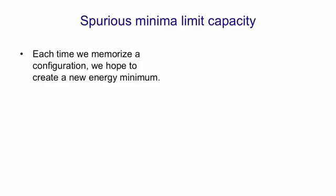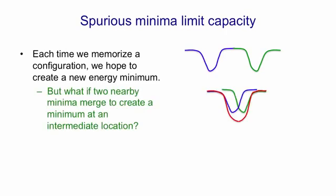If we ask what limits the capacity of a Hopfield net — what is it that causes it to break down — then it's merging of energy minima. Each time we memorise a binary configuration we hope that we'll create a new energy minimum. We might have our state space for all the states of the net depicted horizontally and the energy depicted vertically, and we might have one energy minimum for the blue pattern and another for the green pattern. But if those two patterns are nearby, what will happen is we won't get two separate minima. They'll merge to create one minimum at an intermediate location, and that means we can't distinguish those two separate memories — we'll recall something that's a blend of them rather than the individual memories. That's what limits the capacity of a Hopfield net.